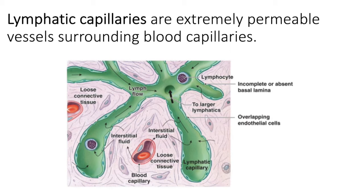Endothelial cells overlap, which creates this sort of incomplete endothelium. Those overlapping endothelial cells create this flap-like mini-valve, which open and close and allow that fluid to enter the lymphatic capillary. Once that fluid enters into the lymphatic capillary, it is called lymph.